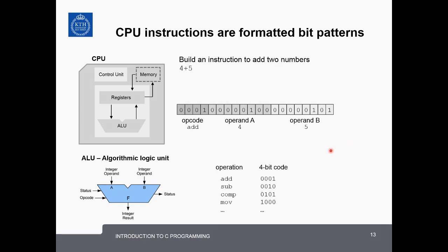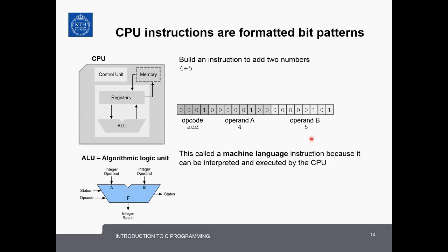Now let's imagine that we want to build an instruction to add two numbers. So we want to say 4 plus 5 and we want to compute this with our machine language. First we would pick the opcode add. Add has the opcode 0001 and that's this 4-bit pattern here. Then we put operand A so 00000100 and operand B 00000101. So that says add 4 plus 5. This is called a machine language instruction because it can be interpreted and executed by the CPU.